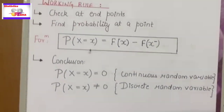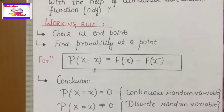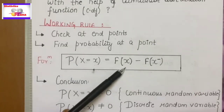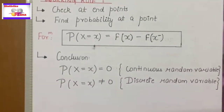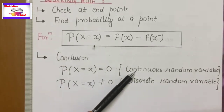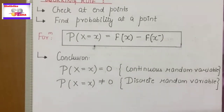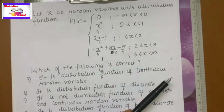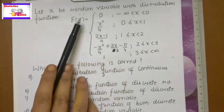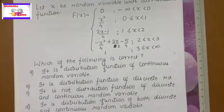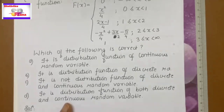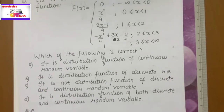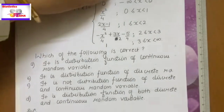First, you will check at the end points. Second, at a point, the probability formula is F(x) minus F(x minus). Then the result: if at a point the probability is 0, it is continuous; if it is not equal to 0, it is discrete. Students, this question comes from the ISS or IIT JAM exam — it is one of the PYQ questions. What is the CDF given for all these values? The question asks: which of the following is correct — determine whether the distribution function is discrete or continuous. These are the four options given. Let's find the solution for this question.